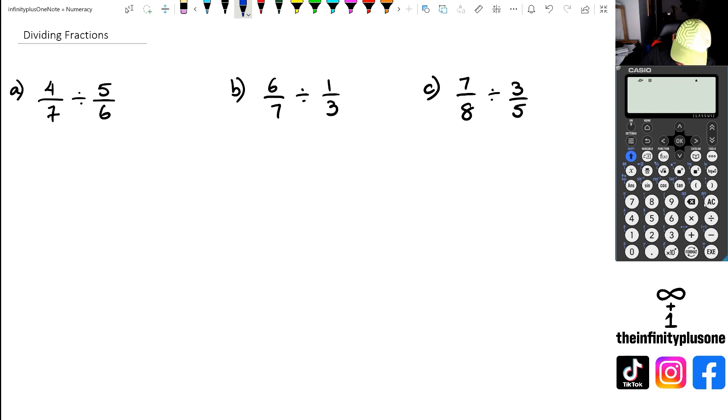So what does it actually mean? So to do a reciprocal, all we have to do is we are literally going to flip this fraction upside down, and we're going to change that divide function into a multiplication. So what we're going to end up with is four over seven multiplied by six over five.